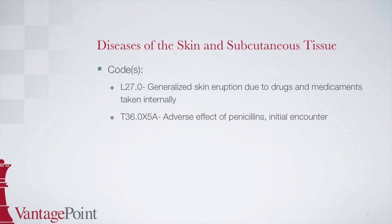When you confirm this code in the tabular, you'll notice that a 7th character is required. Category T36 indicates that the options are A for initial encounter, D for subsequent encounter, or S for sequelae. In this case, documentation states the patient developed dermatitis this morning, so a 7th character of A for initial encounter is appropriate. There is also an instructional note at the beginning of section T36 through T50 which states: code first for adverse effects the nature of the adverse effect, such as dermatitis due to substances taken internally, category L27. Therefore, the dermatitis code must go first. It is so important to check your answers in the tabular list.